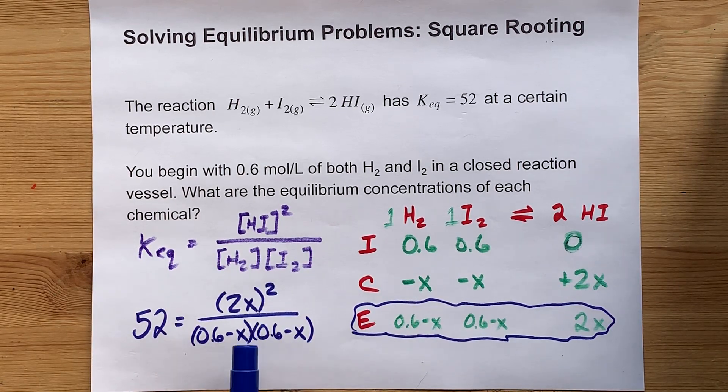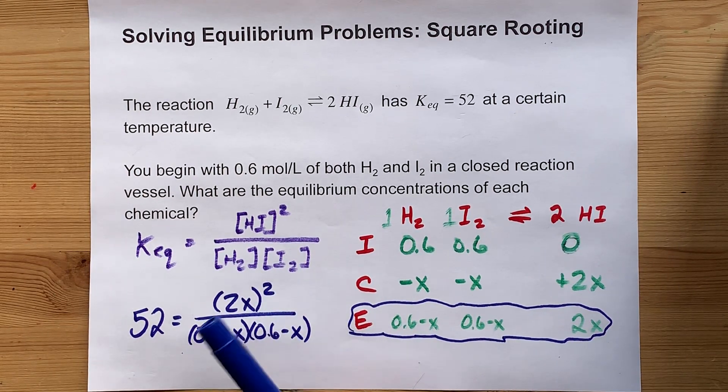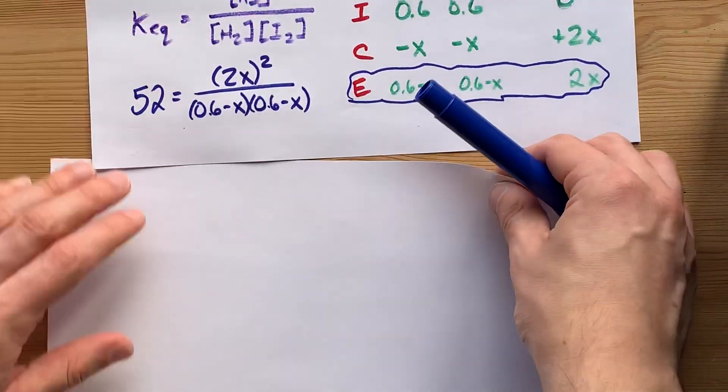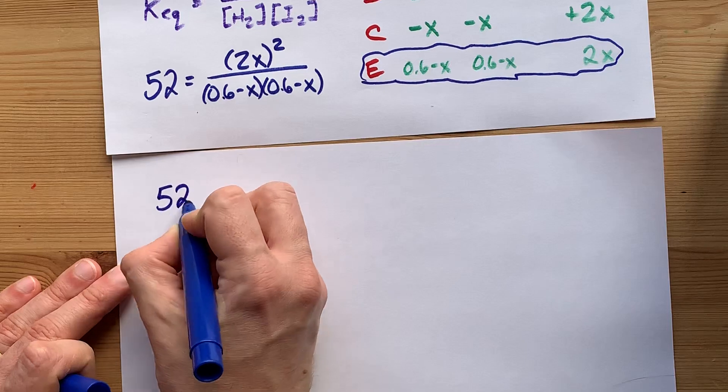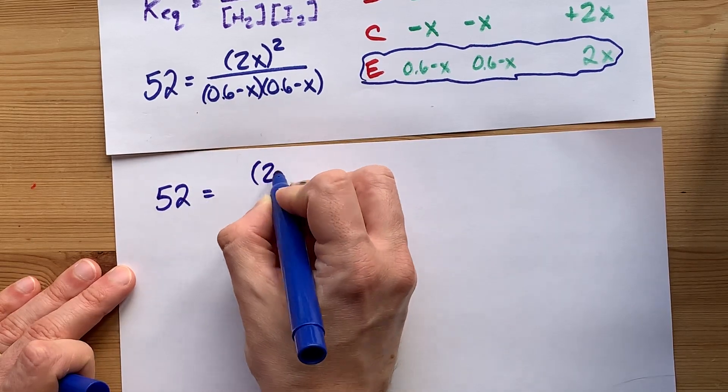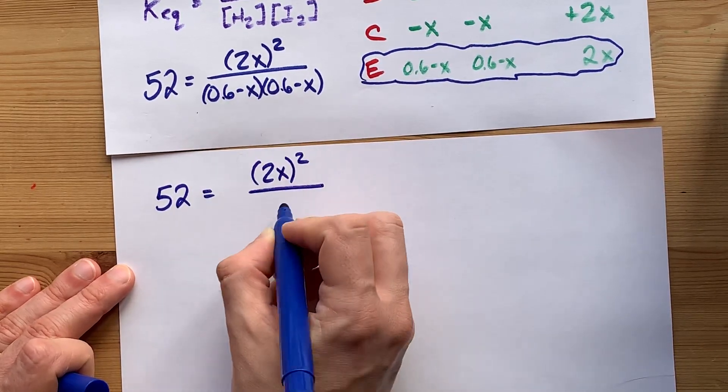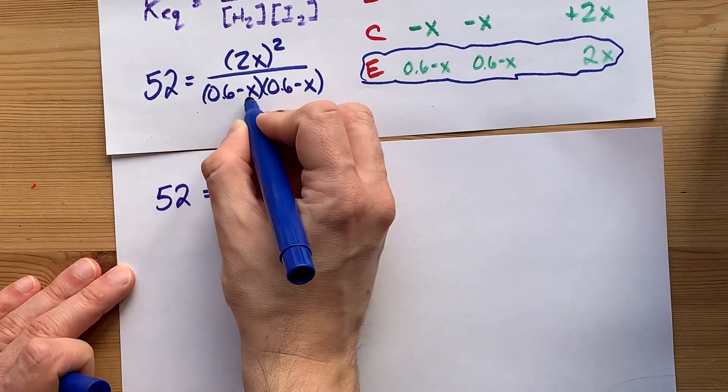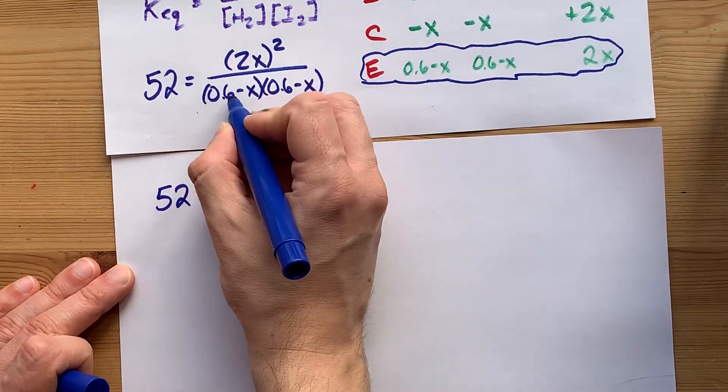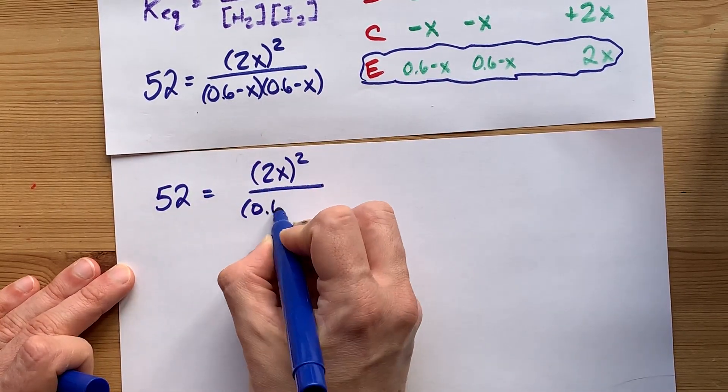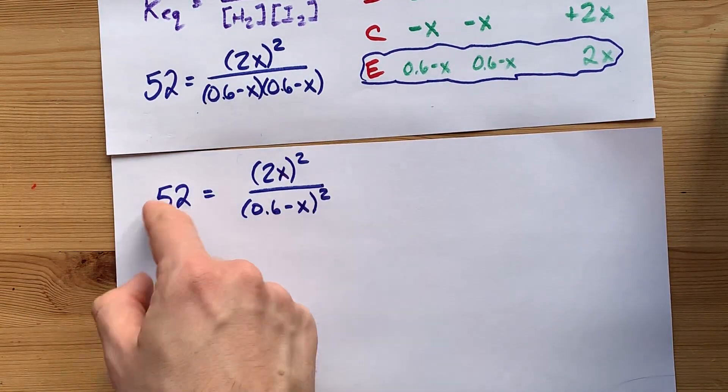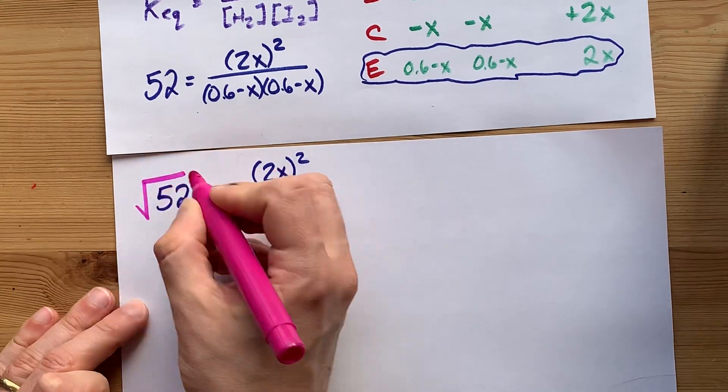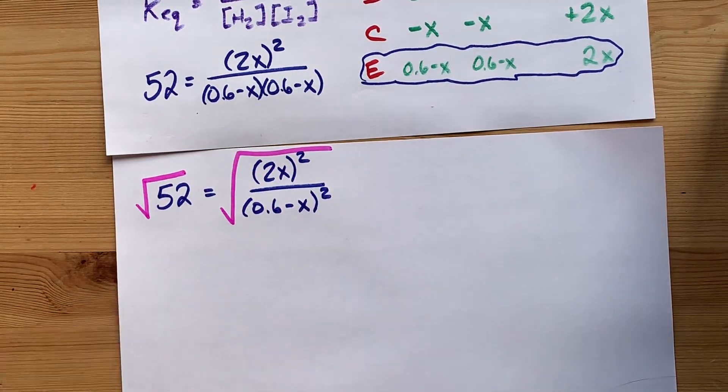Now, if you're good at math, you might already see that you can square root this side. I'm going to make it explicit for you. We're trying to solve for X, and I have 52 equals 2X all squared. And then, because this is 0.6 minus X times itself, it is also squared. So how can you deal with this? The answer is you can square root both sides.